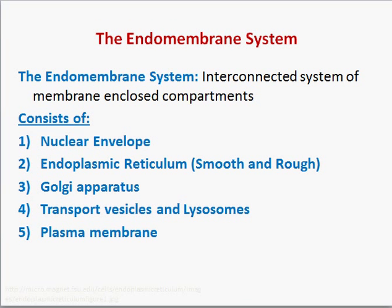We're talking about the endomembrane system. The endomembrane system is an interconnected system of membrane-enclosed compartments. Endo means inside of, membrane means membrane-bound. The parts of the endomembrane system are either physically connected through membranes or indirectly connected through vesicles — small membrane-bound spheres that travel from one of these spots to the next. We start at the nuclear envelope and move down this path toward the plasma membrane.